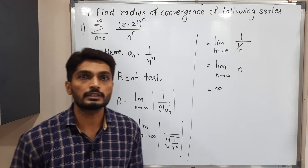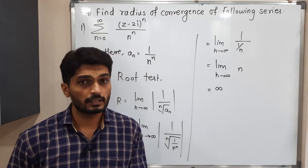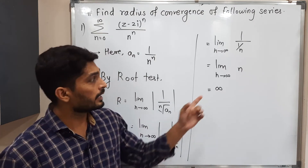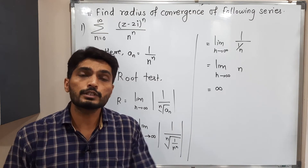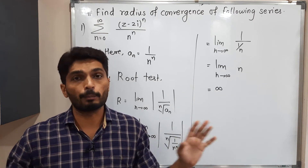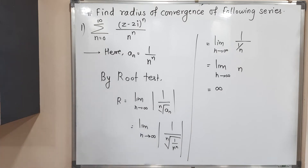So what is the radius of convergence? The radius of convergence is infinity. That means this series is convergent everywhere in the complex plane. You can make a screenshot of it. After that we will go to the next example.